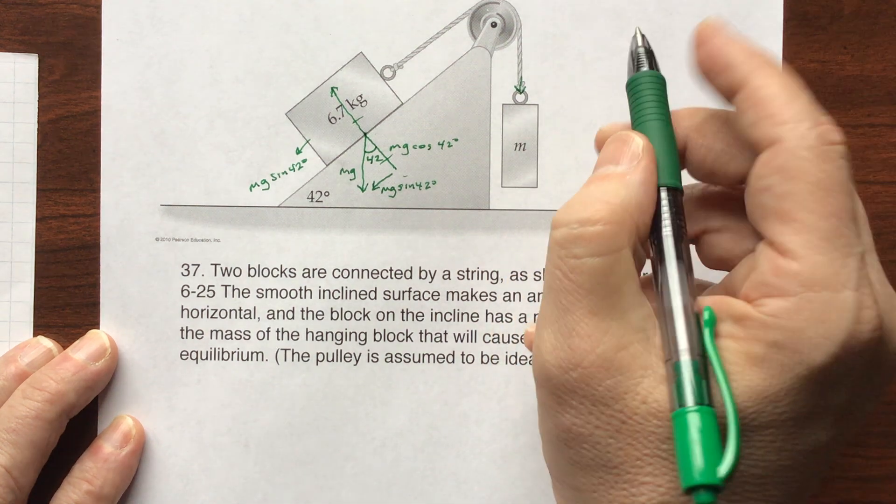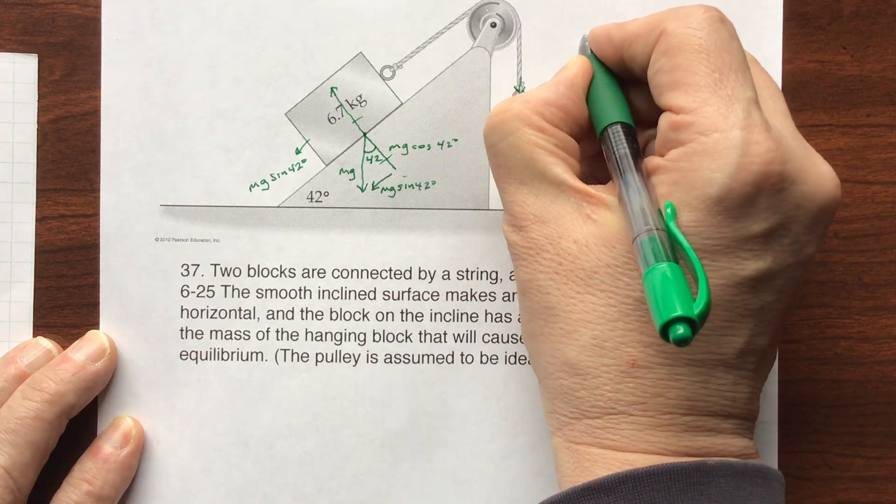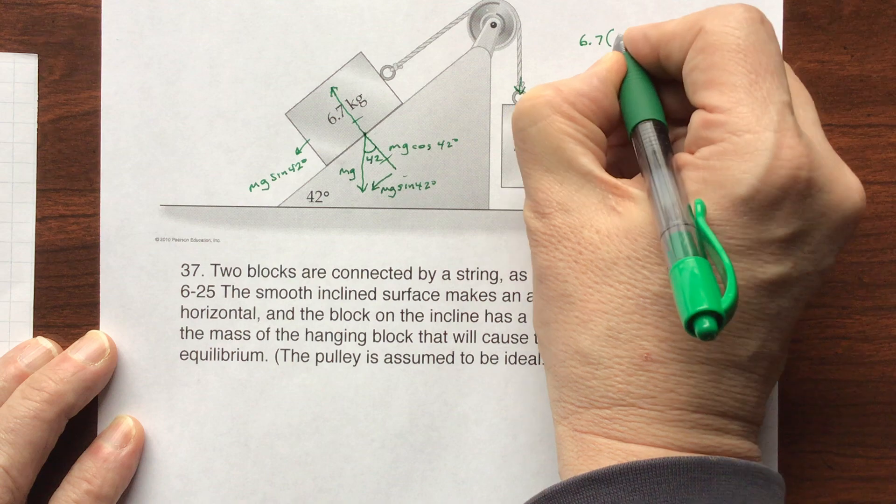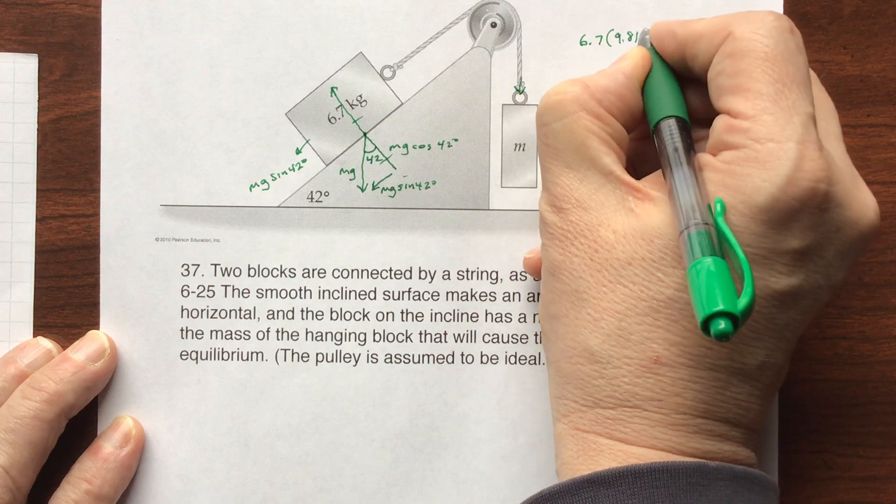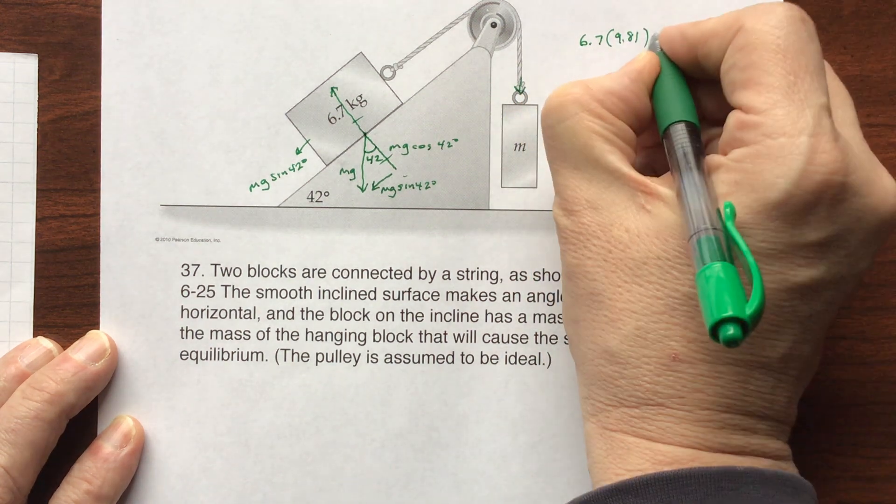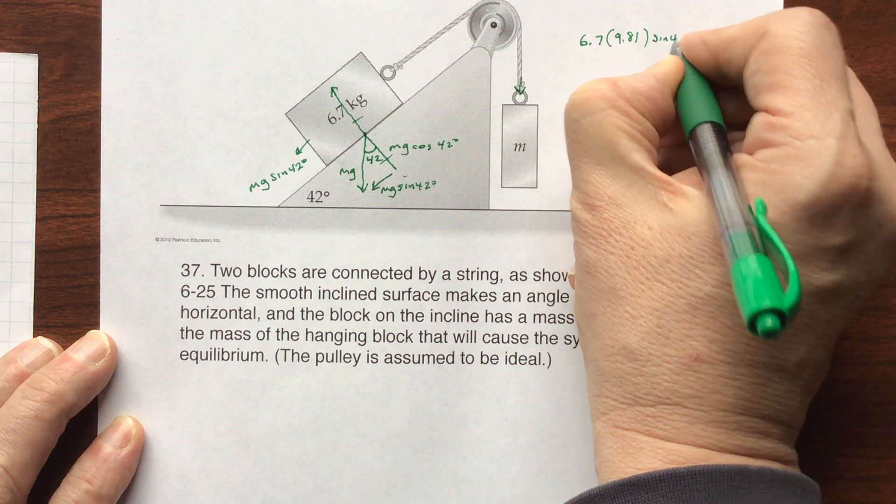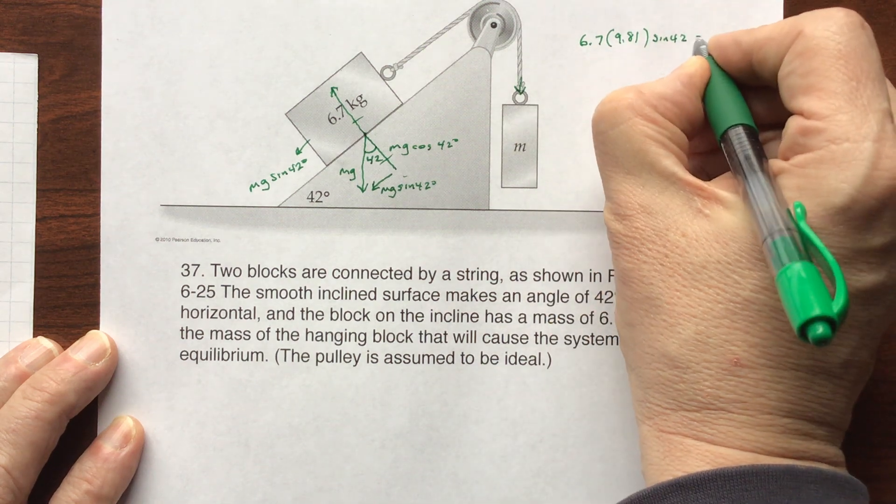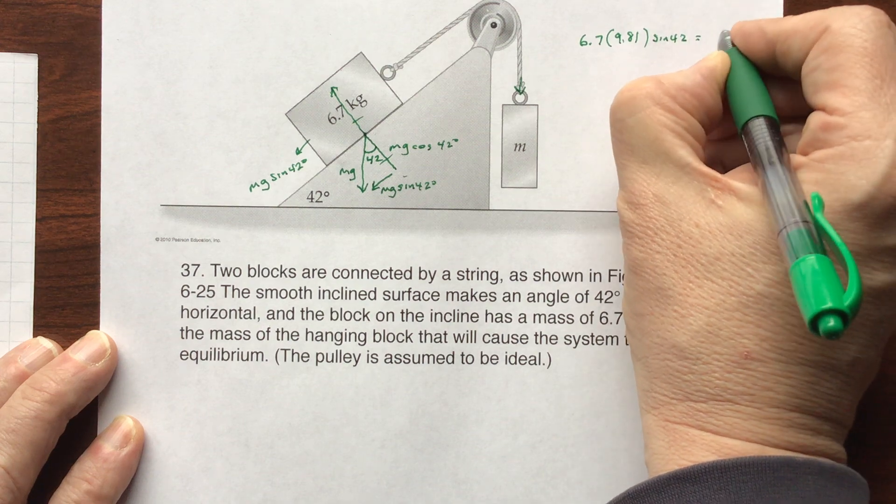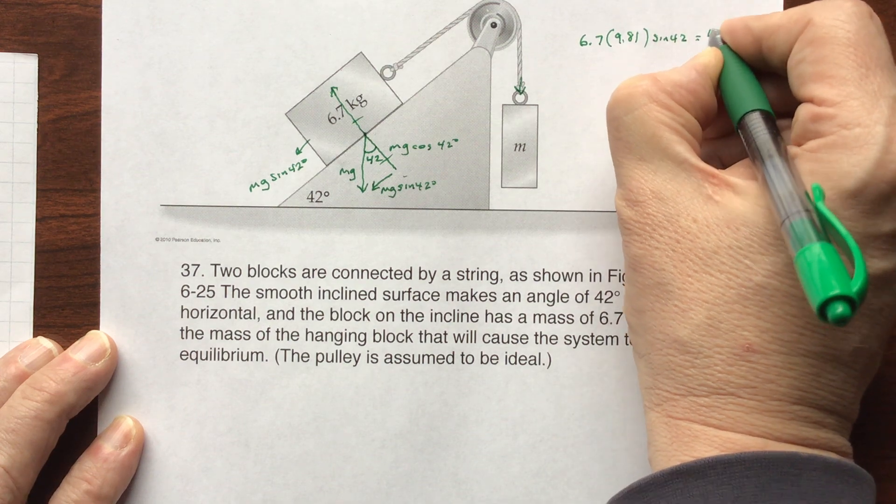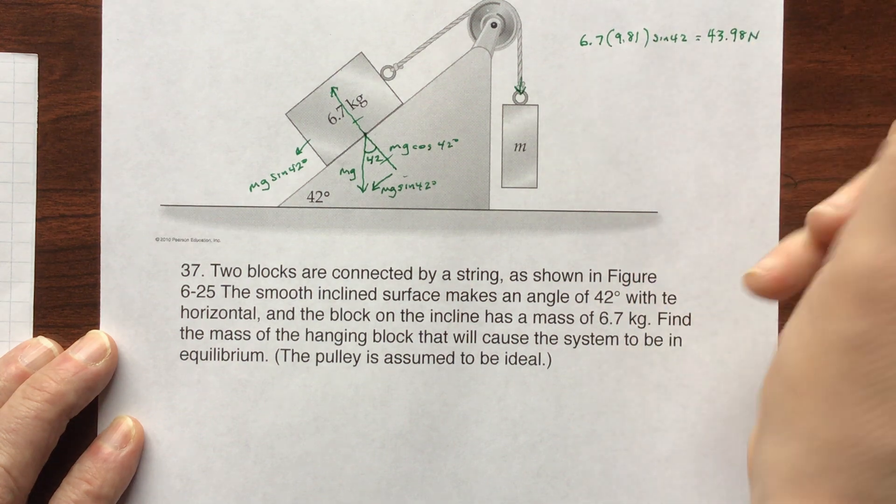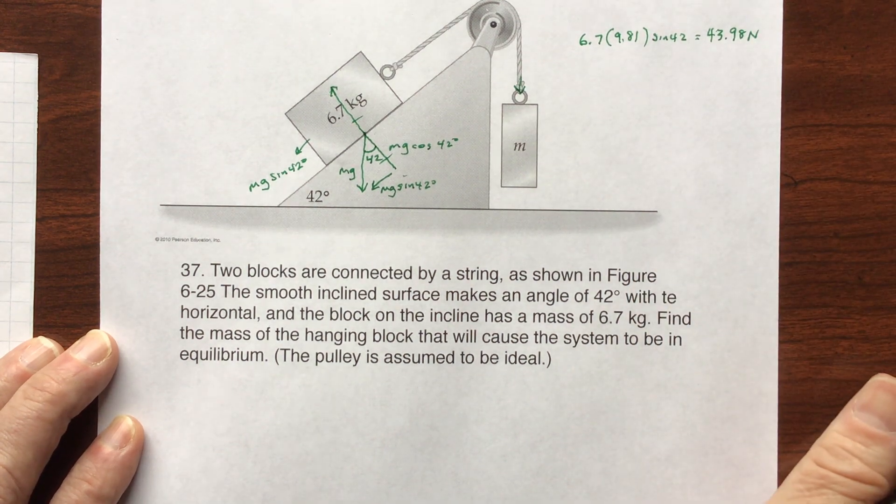Okay, so we'll do that as m, 6.7 kilograms, times 9.81 meters per second squared, times the sine of 42 degrees, which has no units, equals 43.98 newtons. I'll round everything at the end.